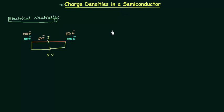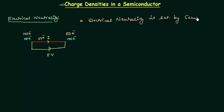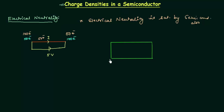Electrical neutrality is a very important concept and it is followed in the case of conductors as well as semiconductors. Let us consider a semiconductor material doped by both n-type and p-type impurity materials. Since electrical neutrality is satisfied by semiconductors also, we can proceed.